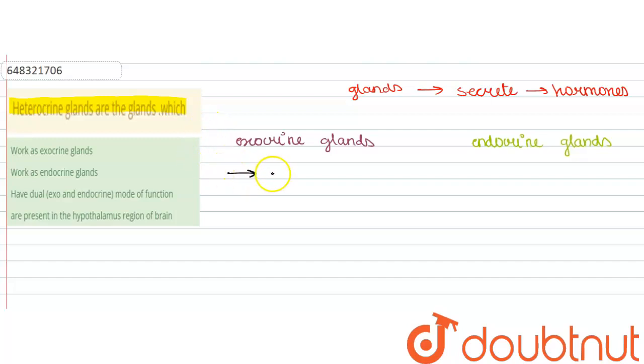And in endocrine glands, these glands are ductless, meaning they secrete the hormones directly into the bloodstream.